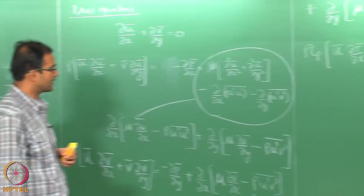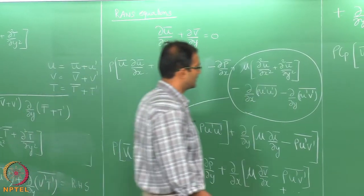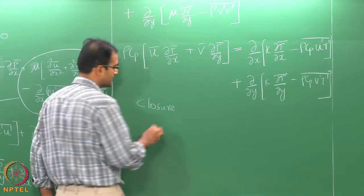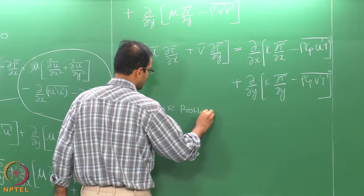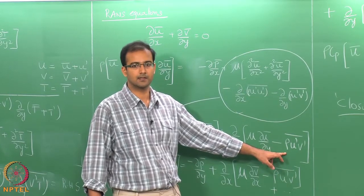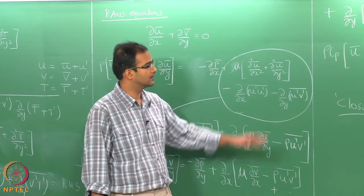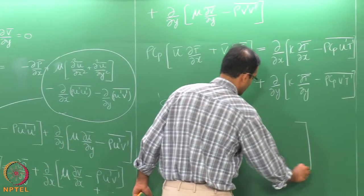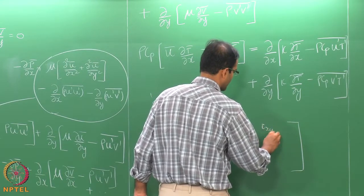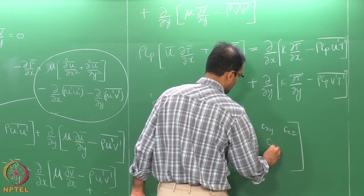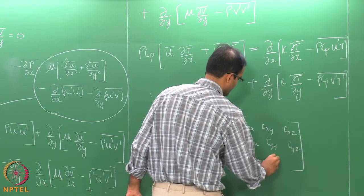Now we have a particular problem in RANS models called the closure problem. When you did the Reynolds decomposition and averaged it, you created turbulent stresses like U-prime V-prime, U-prime U-prime, and so on — similarly in the energy equation. You have molecular diffusion giving τ_xx, τ_xy, τ_xz, τ_yx, τ_yy, τ_yz, τ_zx, τ_zy, τ_zz. Apart from that, you now have a set of nine stresses coming from the turbulent inertial terms.